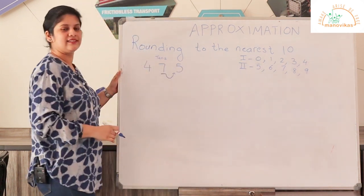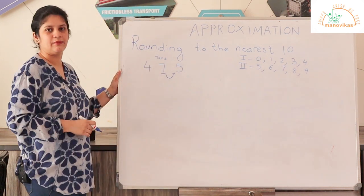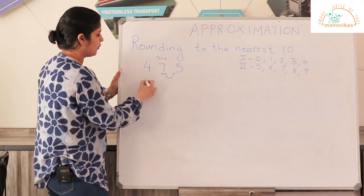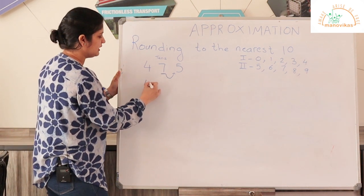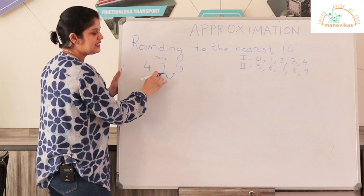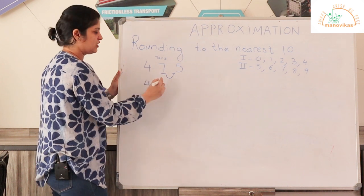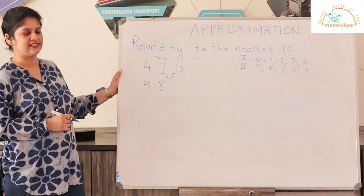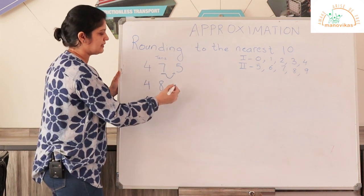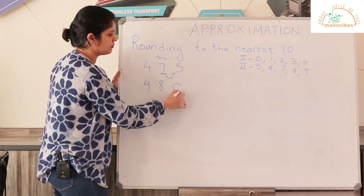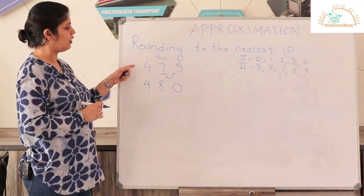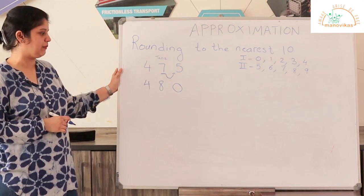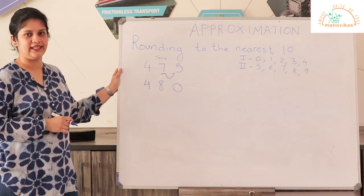If the digit lies in the second range, then the tens place will be increased by 1. So this number when rounded up to the nearest 10: 7 will change to 8. Since we are rounding to the nearest 10, the digit following the tens place has to be 0. So 475 rounded to the nearest 10 will be 480.